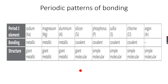Now, periodic patterns of bonding. As we go across a period, sodium, magnesium and aluminium have metallic bonding because they are metals. And because they have metallic bonding, they have giant metallic structures.